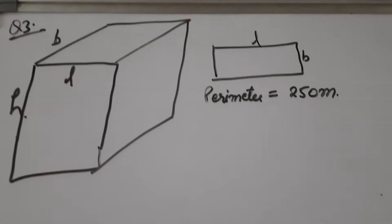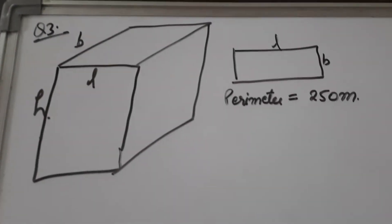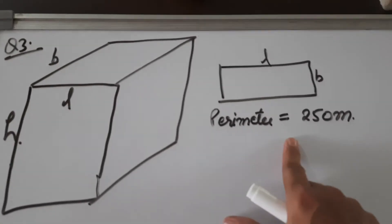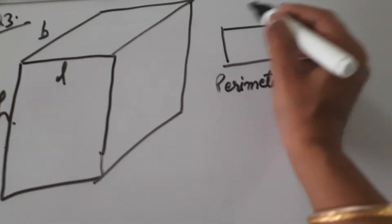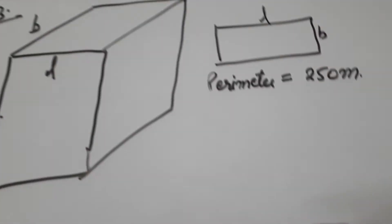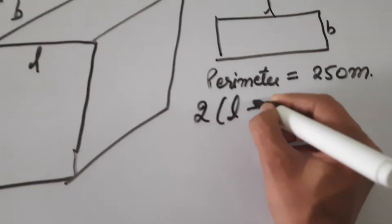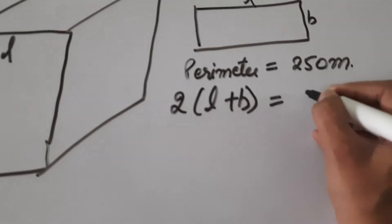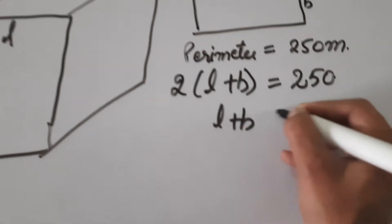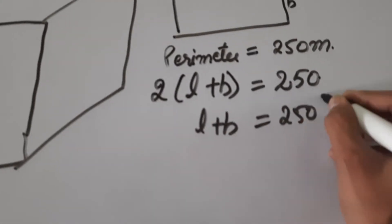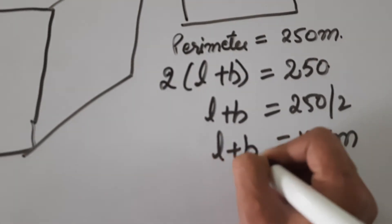Always start the question from the things given to you. Perimeter is given to us. Perimeter of a rectangle means 2 into (L plus B), and this equals 250. From here we can calculate L plus B equals 250 divided by 2, that is 125 meters.